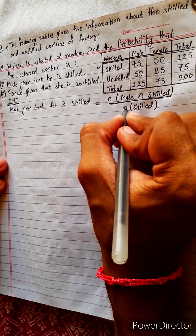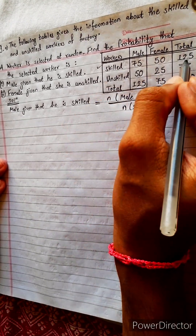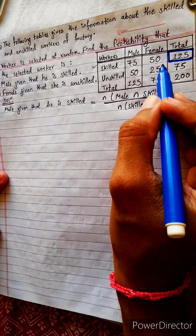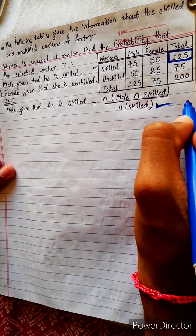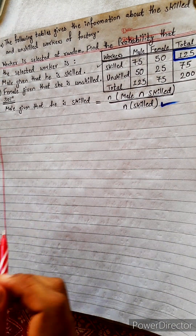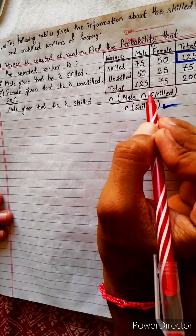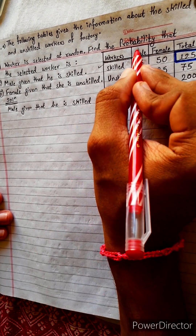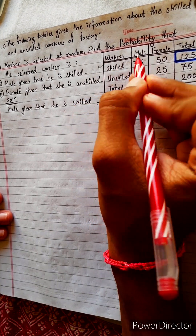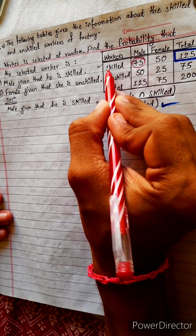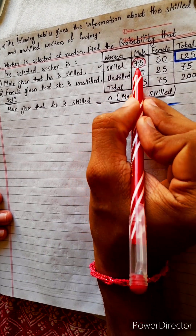We know how many people are skilled — 125 people are skillful. So we have 125 as the number of skilled. Now, male intersection skilled means how many males are skillful. Male intersection skilled means who are male also and who are skilled also. Male intersection skilled = 75.